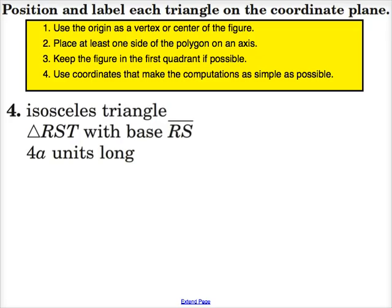So let's start by drawing the figure itself and then adding in the coordinates later. We have an isosceles triangle RST. So first, let's draw an isosceles triangle.